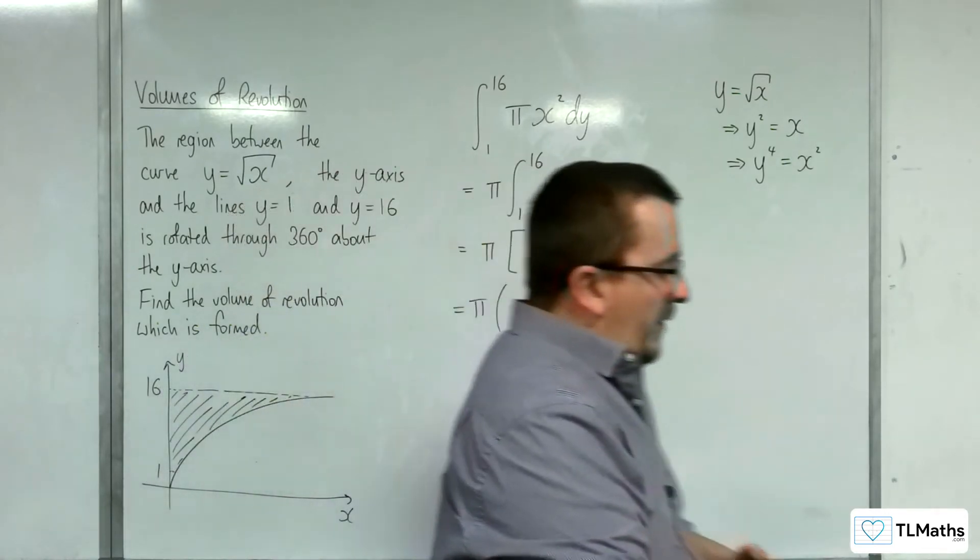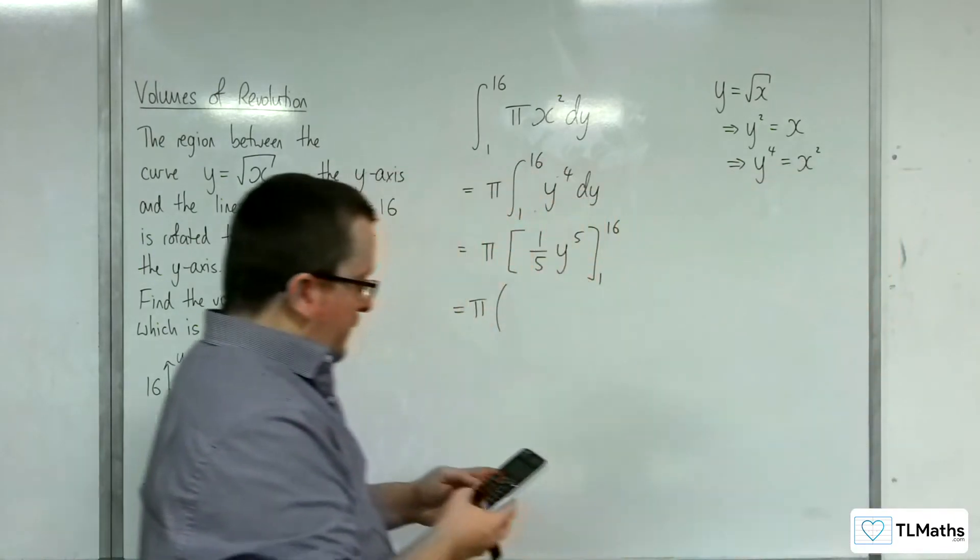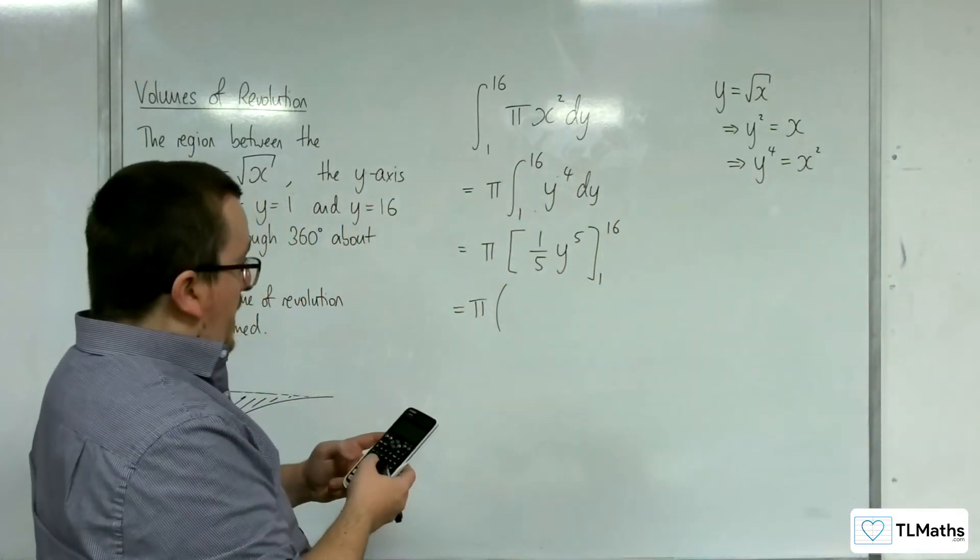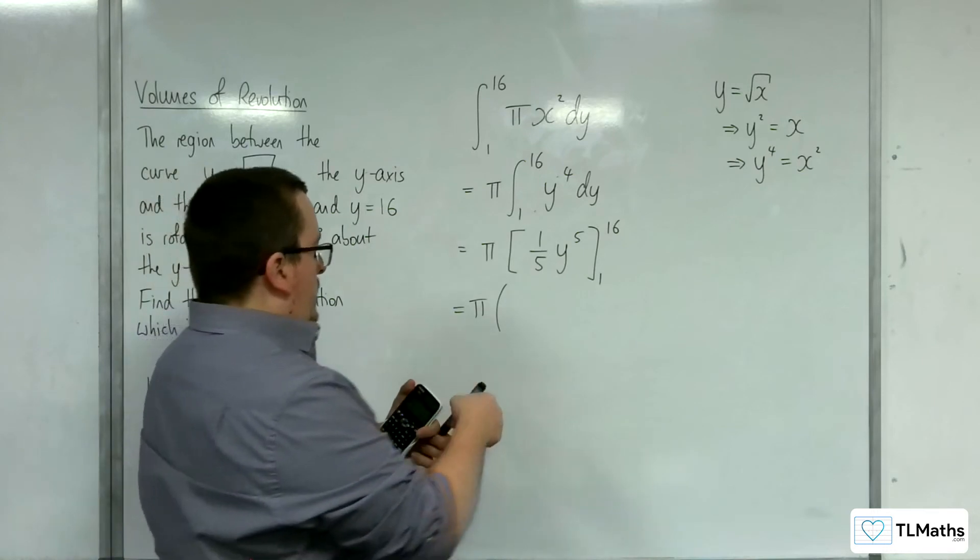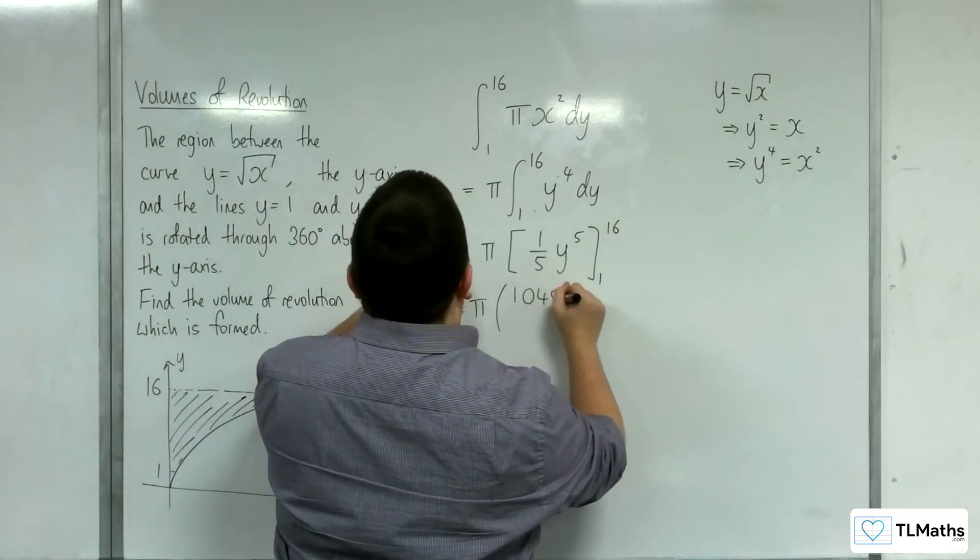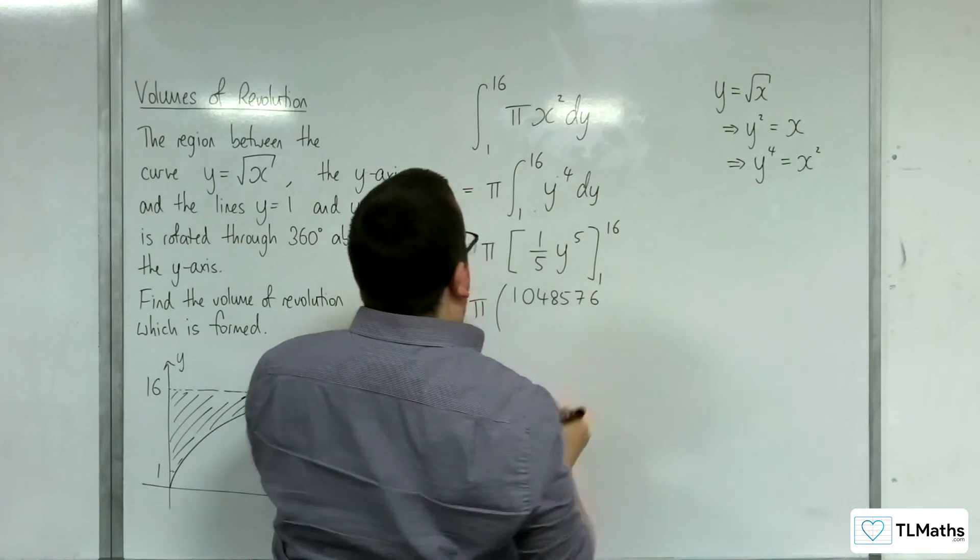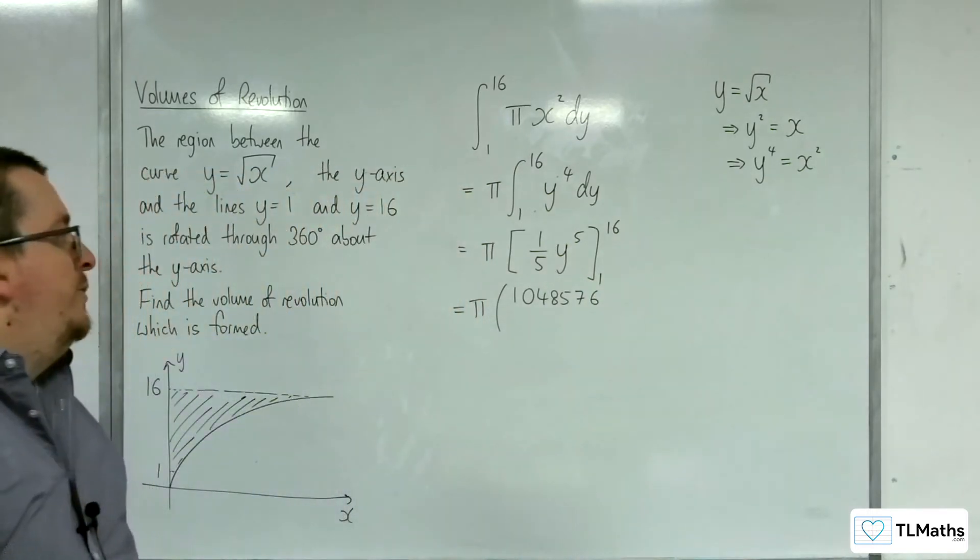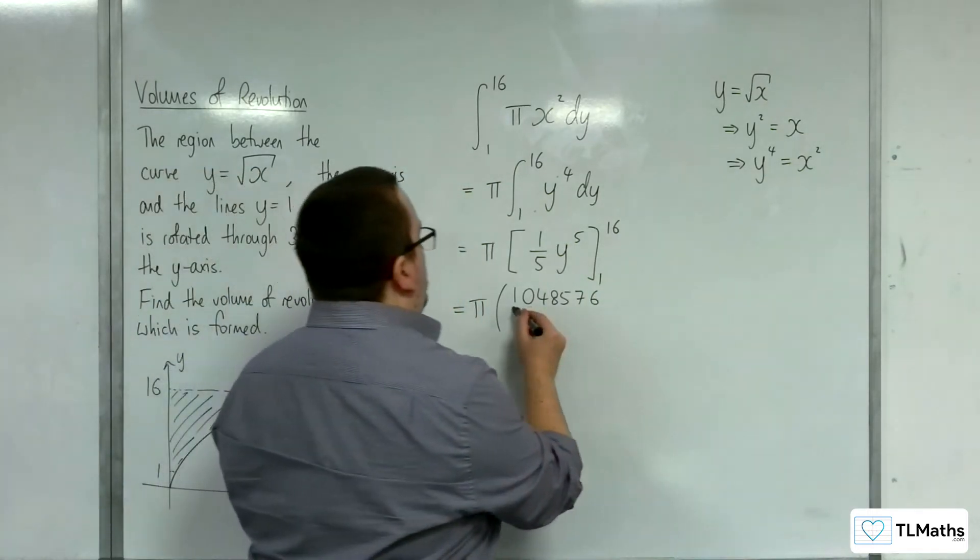So, if I substitute in the 16, so 16 to the power of 5 is 1,048,576. So, 1,048,576, and that's over 5.